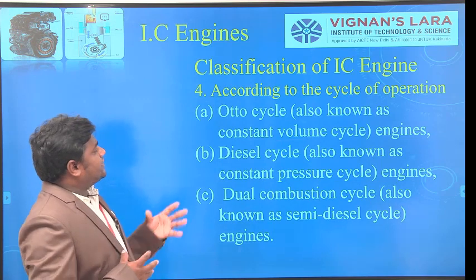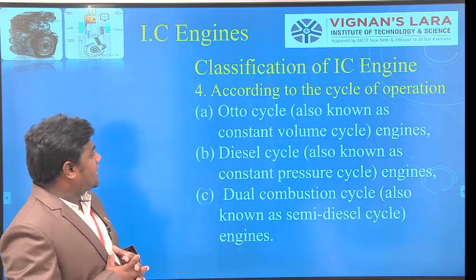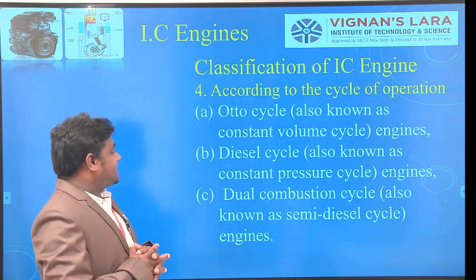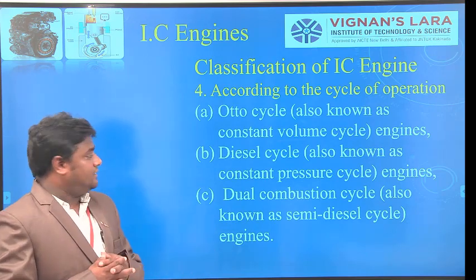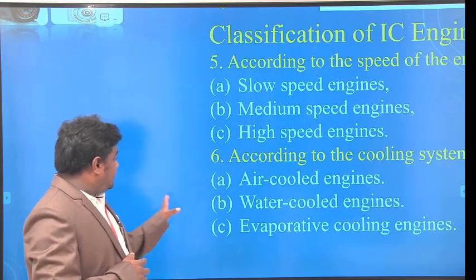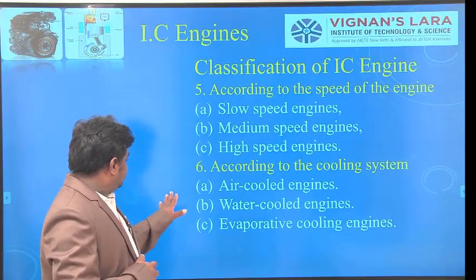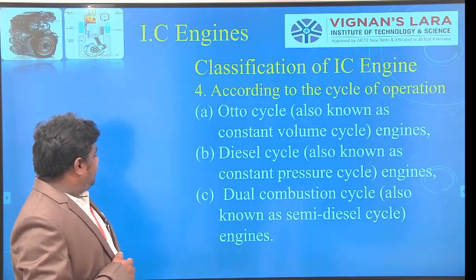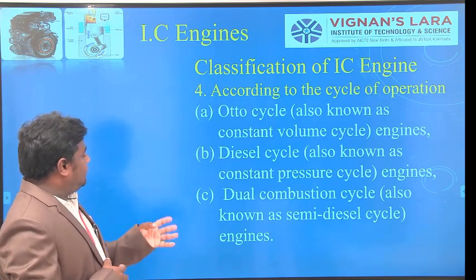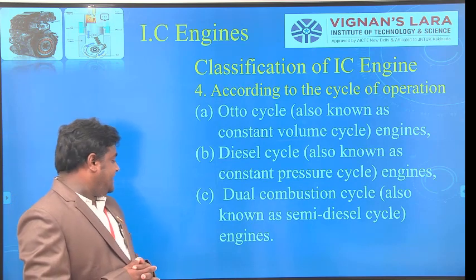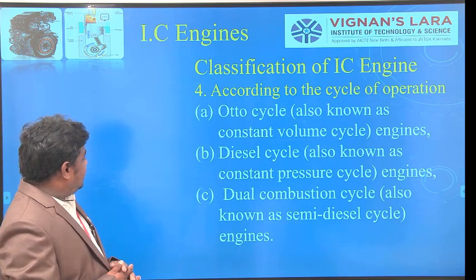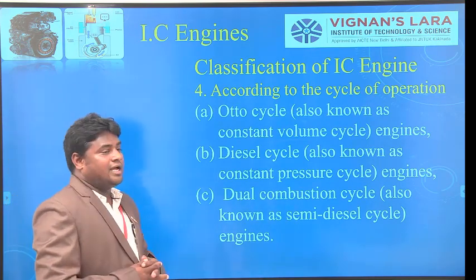According to the cycle of operation, we have three types: Otto cycle, also known as constant volume engines; diesel cycle, also known as constant pressure cycle engines; and dual combustion cycle, also known as semi-diesel cycle engines. These three — Otto cycle, diesel cycle, and dual combustion cycle — are all air standard cycles.